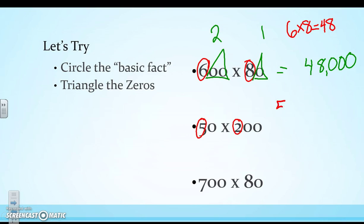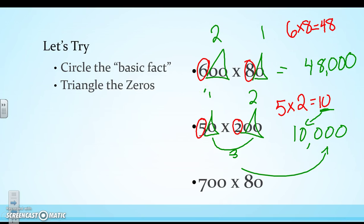Let's look at the next one. My basic fact here is 5 times 2. That's 10. Triangle your 0s. I have 1 and 2. That's three 0s. Now, be careful because there's a 0 already in our basic fact. That does not count as part of our three 0s here. Okay, so you're going to have three 0s from your original problem. But then you have one more 0 from the 5 times 2. So don't get tricked. So it's a total of four 0s because we had one, two more, and then a 0 there in our basic fact.